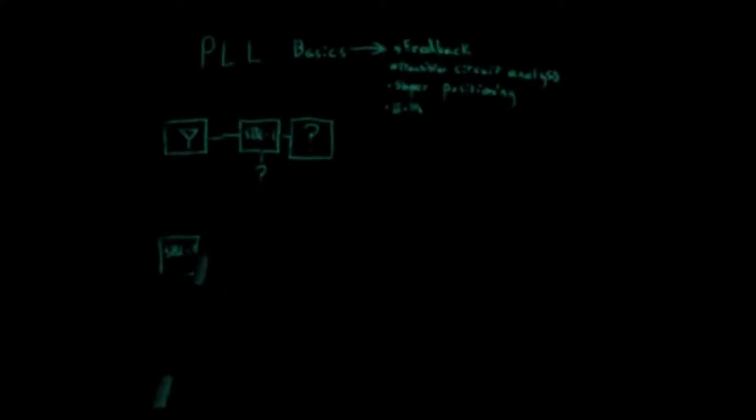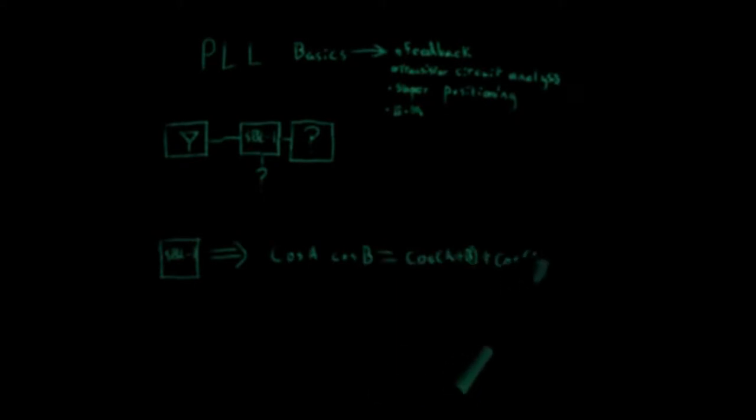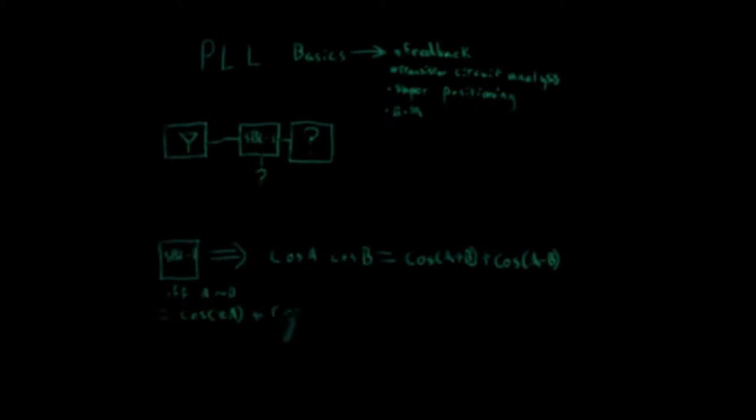When two cosine waves of different frequencies are multiplied, an identity appears, which states, cosine A times cosine B is equal to cosine A plus B plus cosine A minus B. And when the signals are very close to each other, this identity translates to cosine 2A plus cosine DA, which is equal to cosine 2A plus 1 minus DA, DA being the differential.